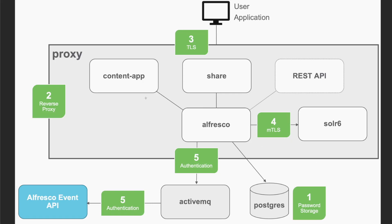Alfresco deployments include a set of services using different communication protocols to work together. In a typical ACS platform, there are some UI applications like Alfresco Content Application and Share, REST API endpoints and ActiveMQ service for integration purposes, and some internal resources like the Alfresco repository, Solr 6, and PostgreSQL database.